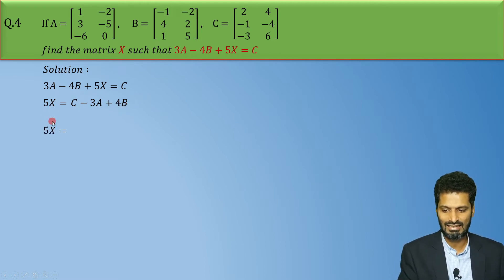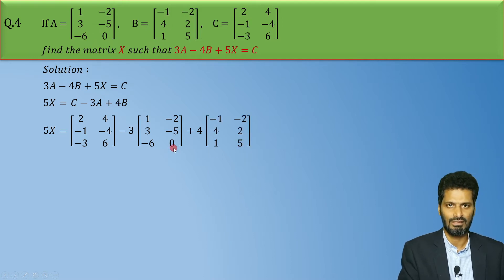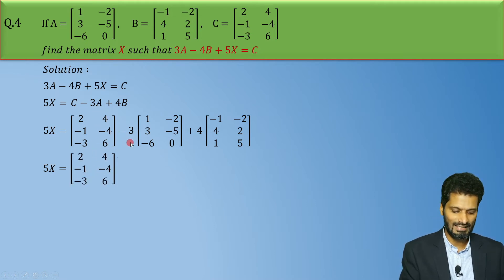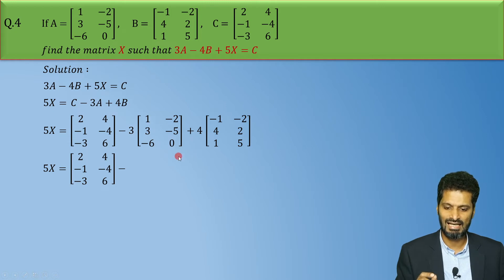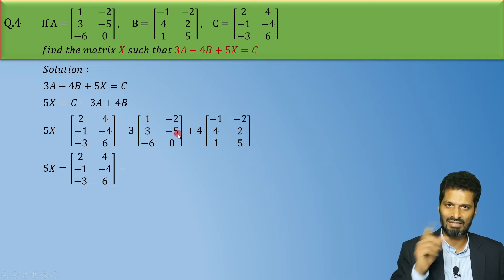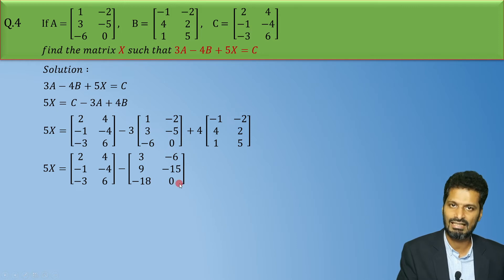Now in the next step, 5X will remain as it is. We replace C with matrix C, minus 3A with matrix A, and plus 4B with matrix B. The minus sign stays outside, and we multiply the matrix by positive 3. So all elements multiplied by 3 give: 3, -6, 9, -15, -18, and 0.